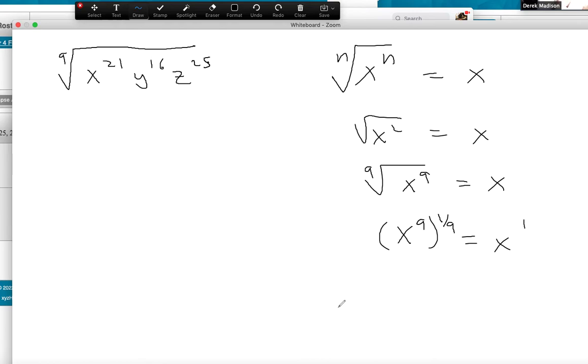And so if I'm saying nine into 21, that's two, which is 18. And then 21 minus 18 would be remainder three.